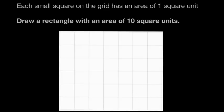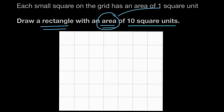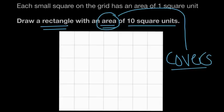We're asked to draw a rectangle with an area of 10 square units. The word 'area' is talking about how much space our shape covers. So our shape, in this case, is a rectangle, and we're being asked to draw a rectangle that covers 10 square units. We know that each of these is one square unit, so we want a rectangle that covers 10 of the square units.